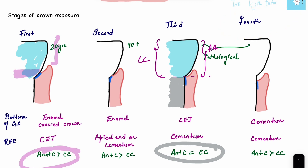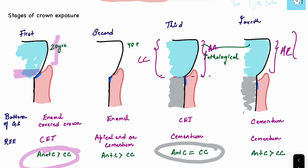In the fourth stage, the gingival sulcus may go beyond the cemento-enamel junction, and we can see some root exposure — which is very problematic. The bottom of the gingival sulcus is now on the cementum, and the reduced enamel epithelium is also on the cementum. Now the clinical crown is bigger than the anatomical crown, because the gingiva has receded so much that even part of the root is visible.